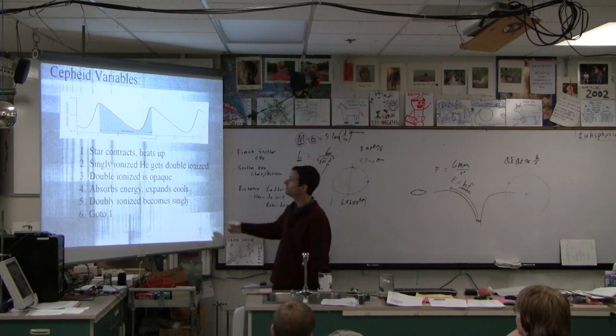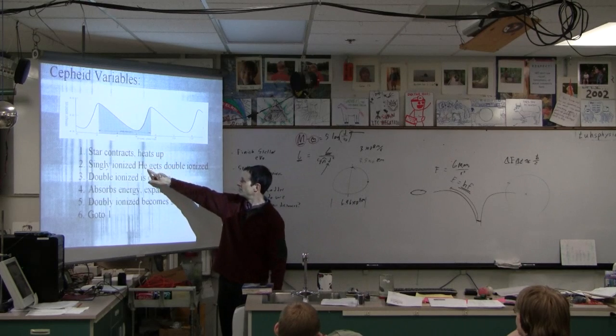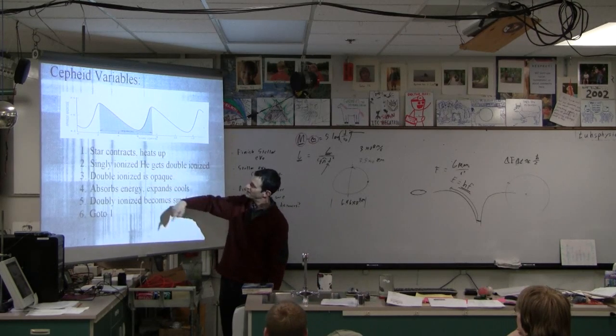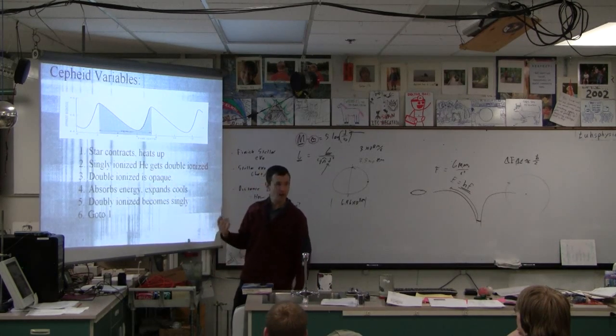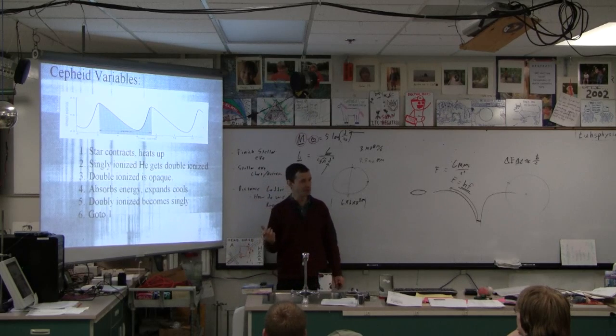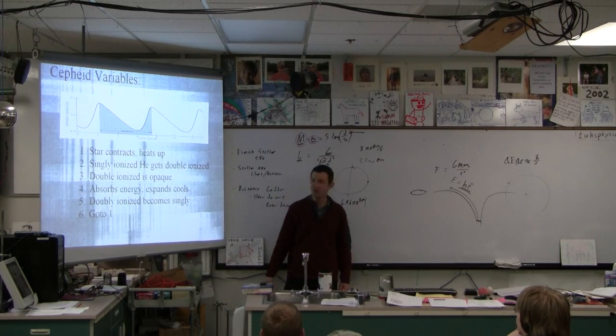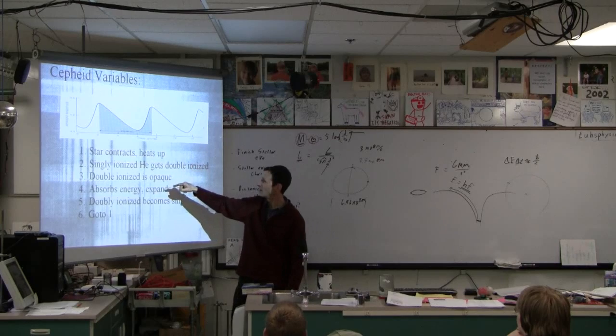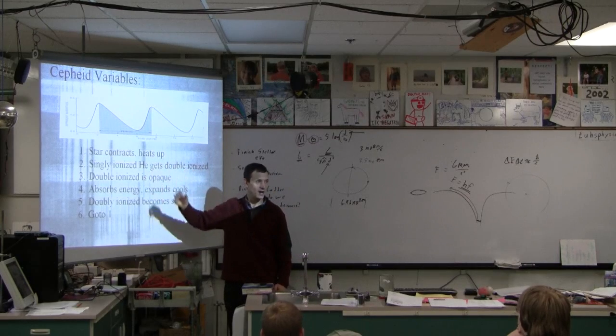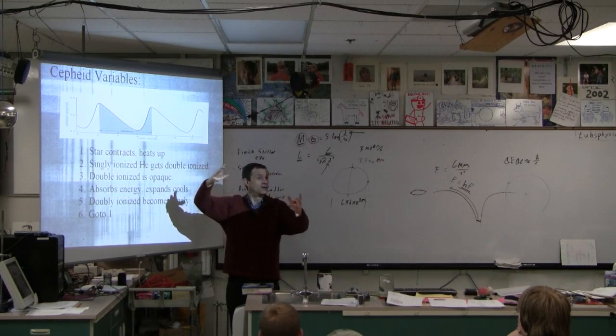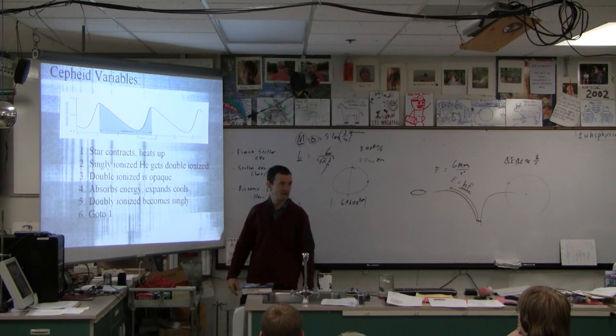Doubly ionized helium becomes singly ionized, and now the radiation can get out, and it does. So what's it going to do? Contract. It's going to cool down, contract, heat up, da-da-da-da-da, there it goes. So Cepheid variables have this mechanism that makes them unstable. There's like a positive feedback thing. As it gets hotter, it causes something that makes it get hotter until it has to expand and cool itself down.